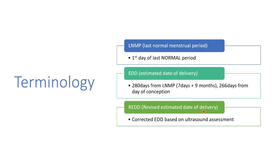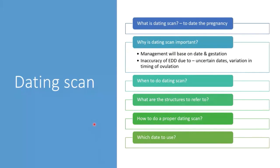REDD means revised estimated date of delivery, meaning the EDD has been corrected based on ultrasound assessment. The dating scan is done to date the pregnancy — to know when the EDD or REDD is, and to know the gestational age. All management in pregnancy is based on the date and gestation, so it is very important to get the date correct from the very beginning. Inaccuracy of EDD can occur because patients are uncertain about dates, there may be variation in ovulation timing, or the accoucher did not know how to date the pregnancy properly.